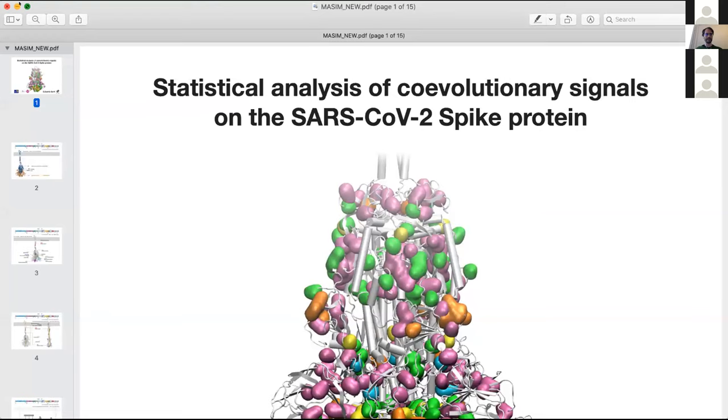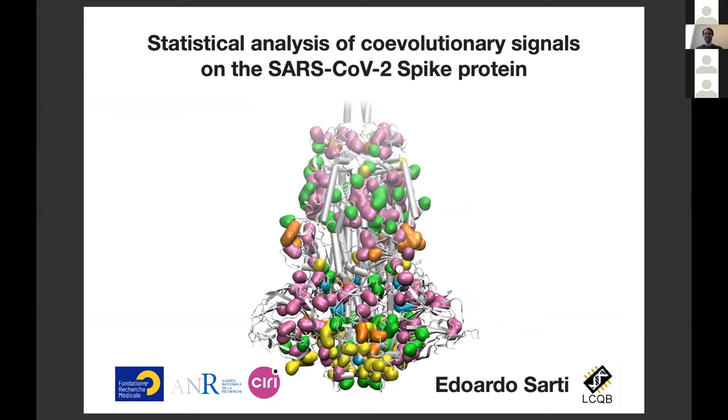Thank you to the organizers for this opportunity, and thank you all for being here. This project is a collaboration between the RCQB laboratory in Sorbonne University and the CRI at ENS de Lyon. I'll tell you about the statistical analysis of coevolutionary signals that we are performing on the SARS-CoV-2 spike protein.